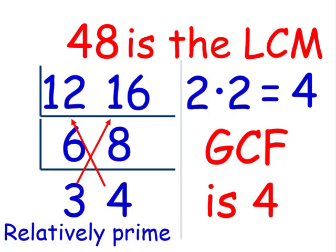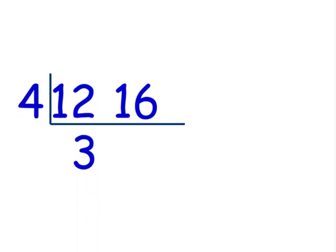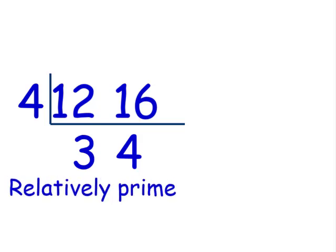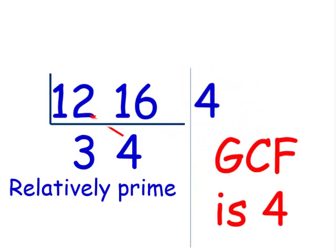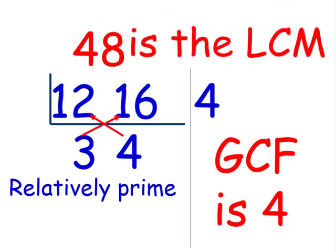Some of you might have been saying: couldn't we just factor out the 4? And yes, you are correct. You could have initially factored out a 4 — that would be the most efficient way of finding the GCF and the LCM. We still know 3 and 4 are relatively prime. Therefore, our GCF is 4 and our LCM is still 48. Remember, 4 times 12 is 48, as well as 3 times 16. The LCM is 48.